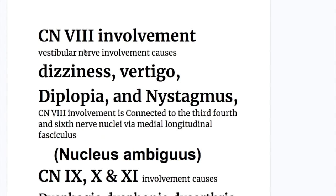Cranial nerve eight, the vestibulocochlear nerve, causes dizziness, vertigo, diplopia, and nystagmus. Cranial nerve eight is connected to the third, fourth, and sixth cranial nuclei — the oculomotor, trochlear, and abducens nerve nuclei — via the medial longitudinal fasciculus.